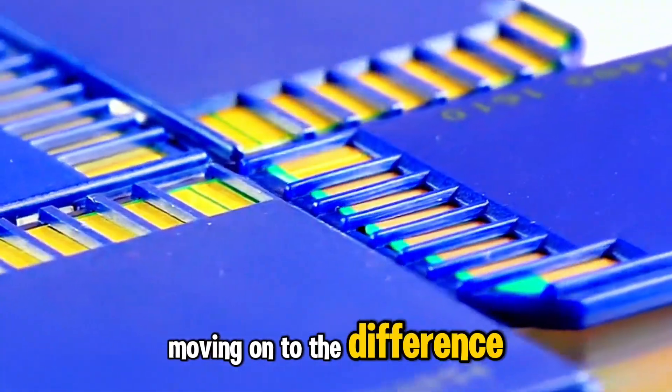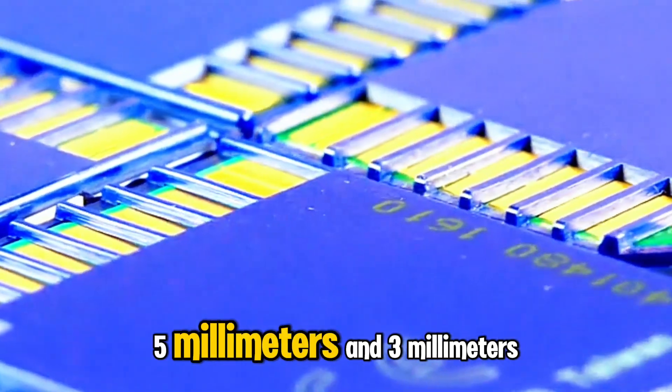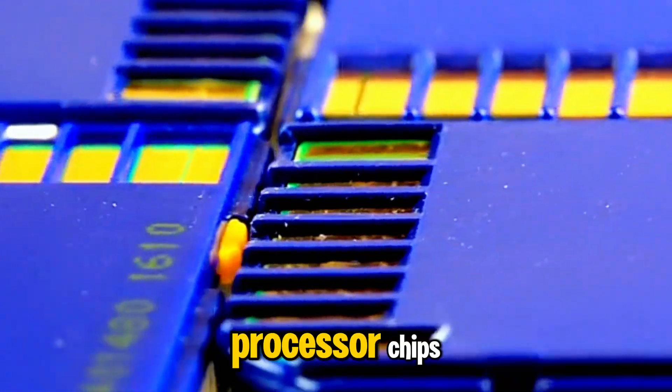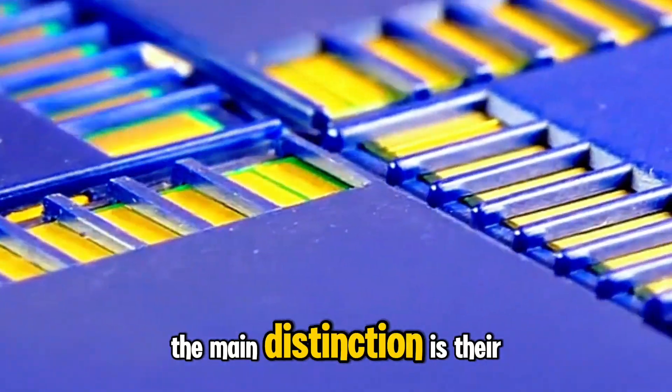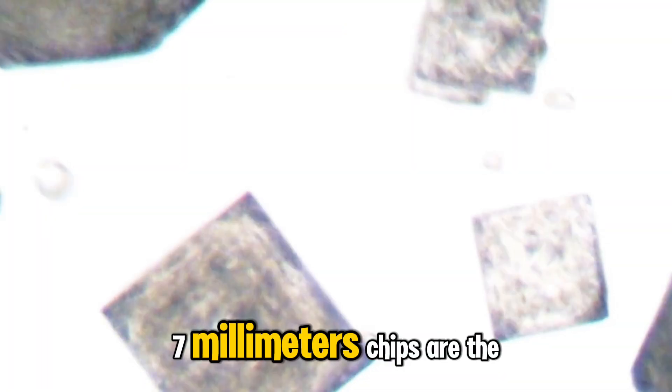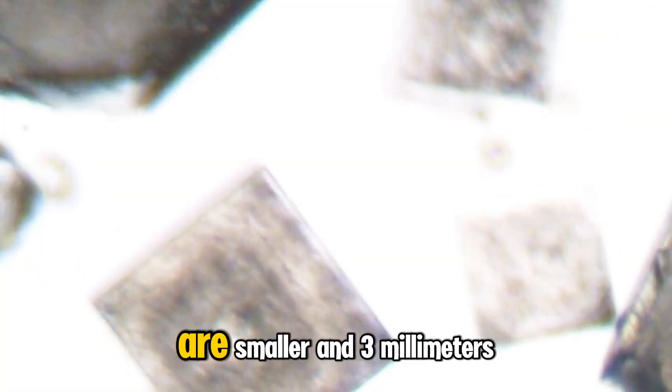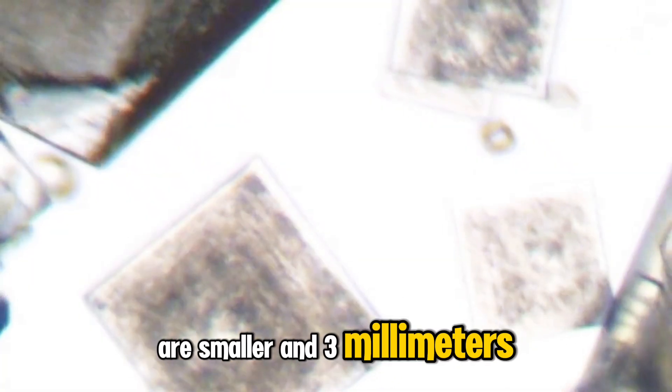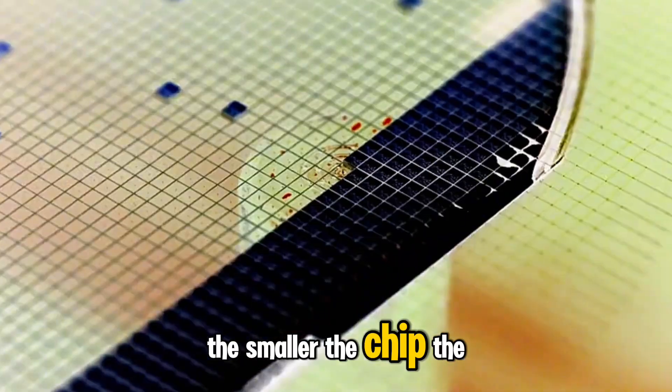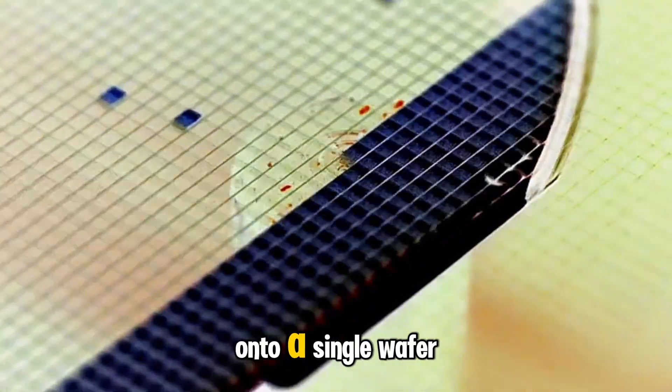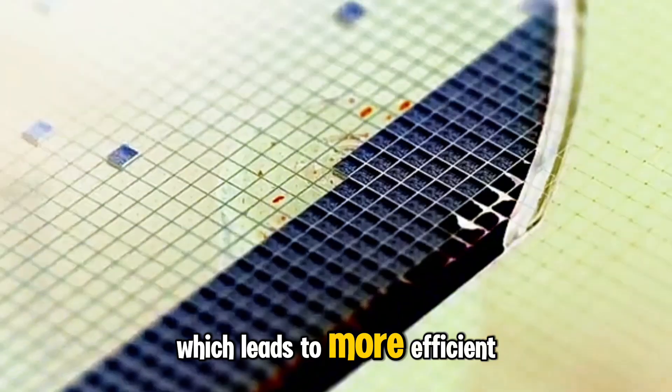Moving on to the difference between seven millimeters, five millimeters, and three millimeters processor chips, the main distinction is their size. Seven millimeters chips are the largest, while five millimeters chips are smaller, and three millimeters chips are the smallest. The smaller the chip, the more that can be packed onto a single wafer, which leads to more efficient manufacturing and lower costs.